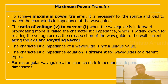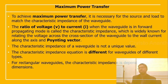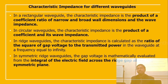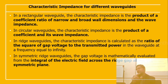The ratio of voltage to current when the waveguide is in forward propagating mode is the characteristic impedance, used for relating the voltage across the cross-section to the wall current along the axis and the Poynting vector. The characteristic impedance is not a unique value — it is different for different waveguide types. For rectangular waveguides, the characteristic impedance depends on the dimensions: it is the product of a coefficient, the ratio of the narrow and broad wall dimensions, and the wave impedance. For circular waveguides, it is the product of a coefficient and the wave impedance.